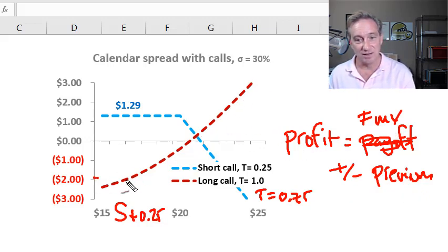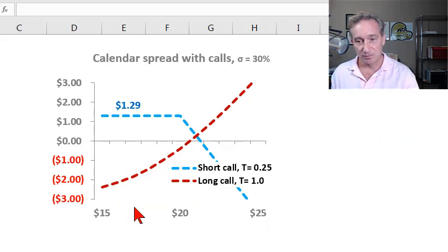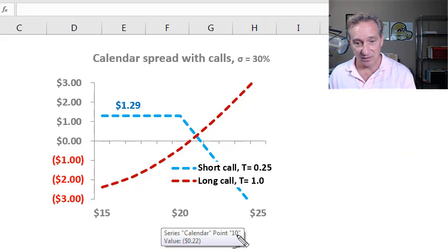And that's why we get the curvilinear line here, because at that point in time in three months, this long call will have both intrinsic value and time value. And it's the time value money that gives it the curvilinear shape.